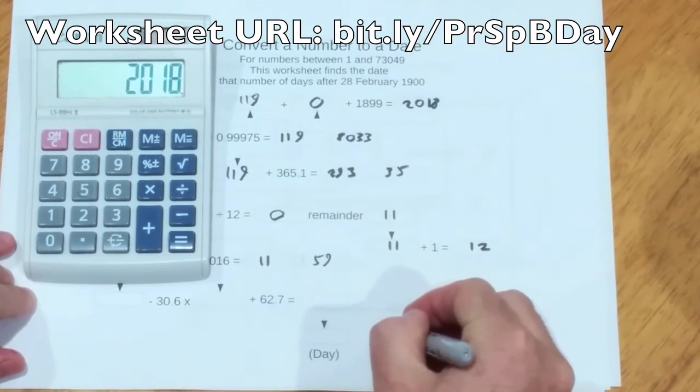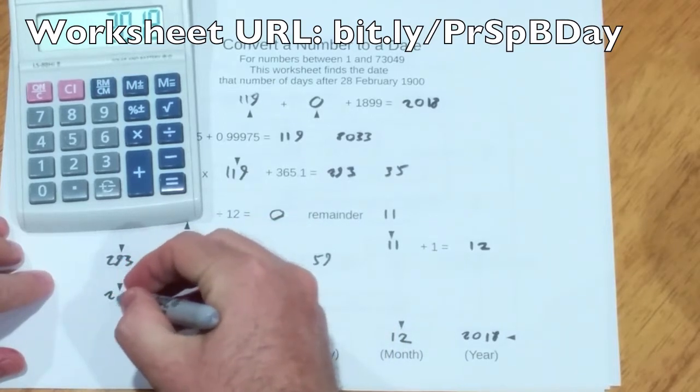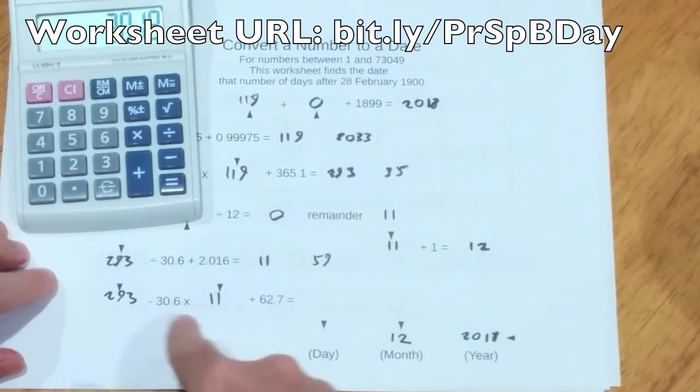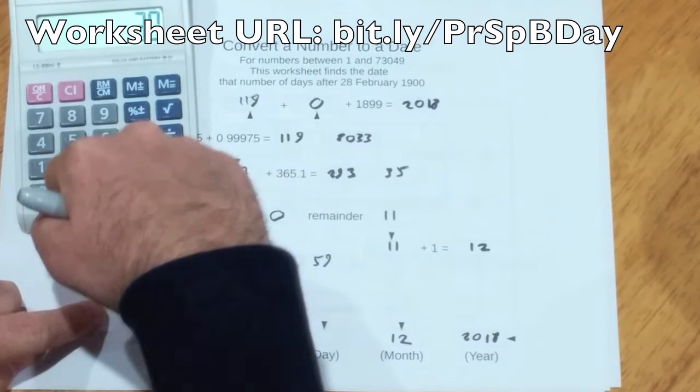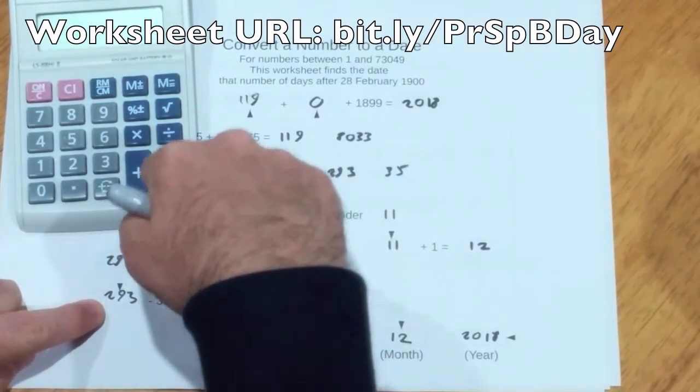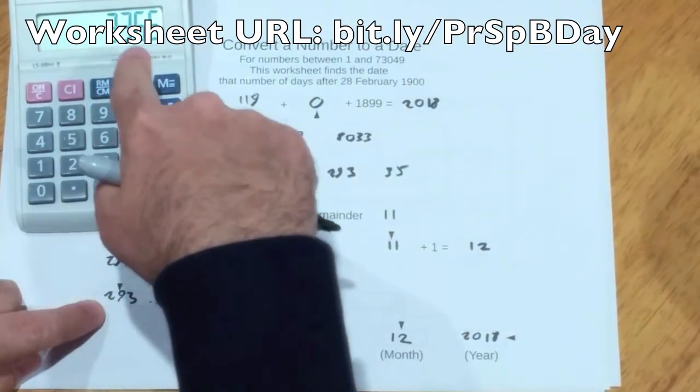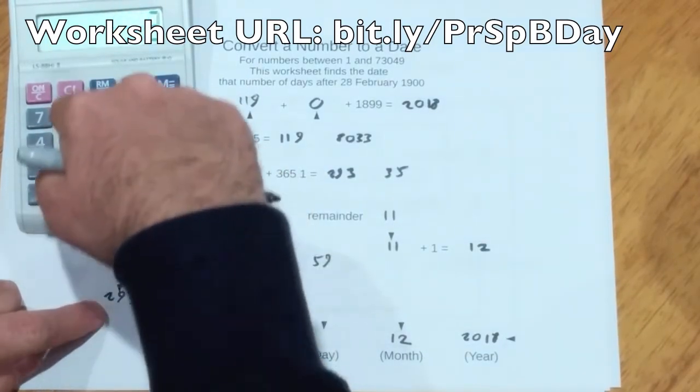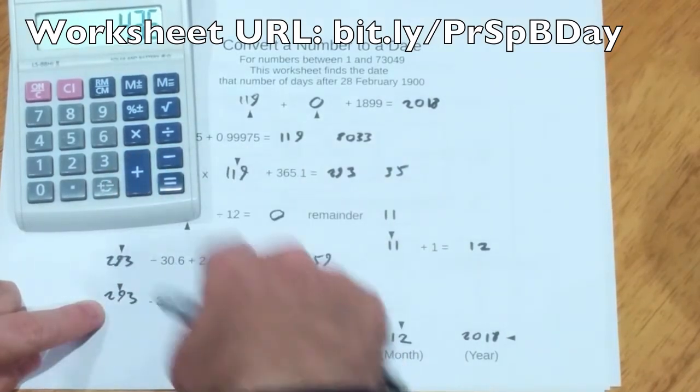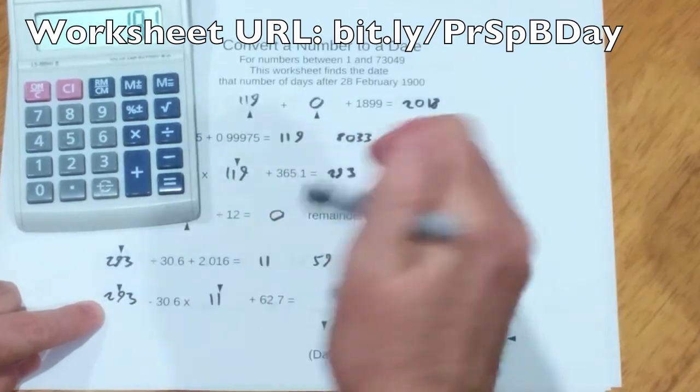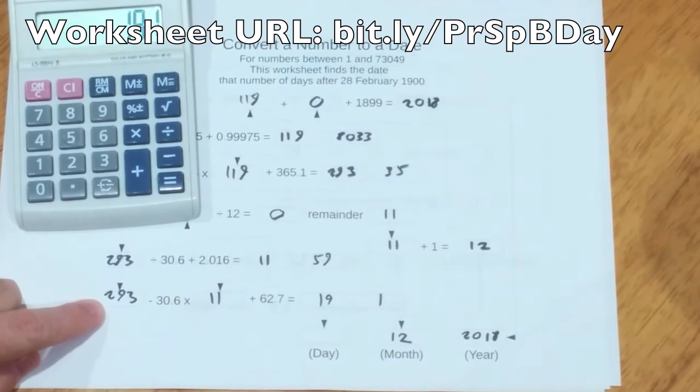We've just got the day left to work out. 293. 30.6 times 11 is 336.6. We need to subtract that from 293, which is negative 43.6. Add 62.7 to that, and then it gets 19.1. And so, Neil Armstrong.